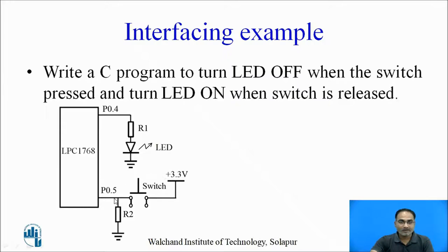Look at this switch. By default, P0.5 is connected to ground, so if you read the status of P0.5, by default it will read as 0. When the switch is pressed, P0.5 is connected to 3.3 volts, and when you read the status of P0.5, it will read as logic high.